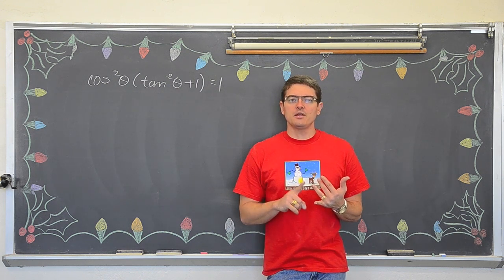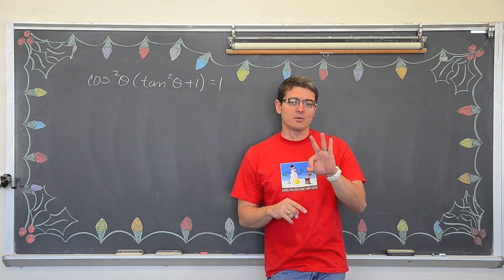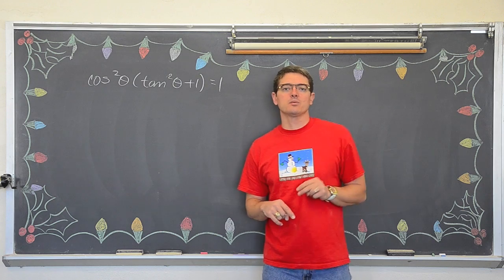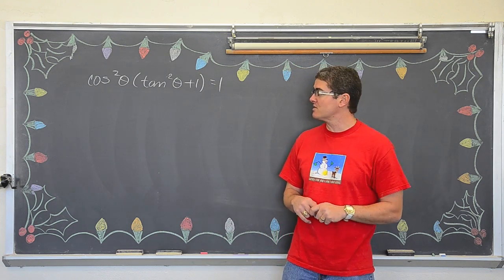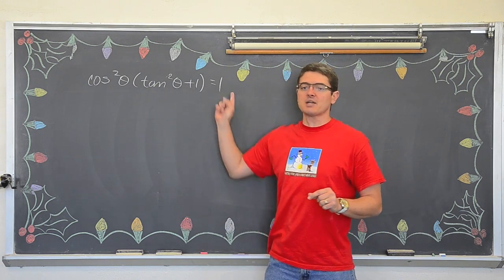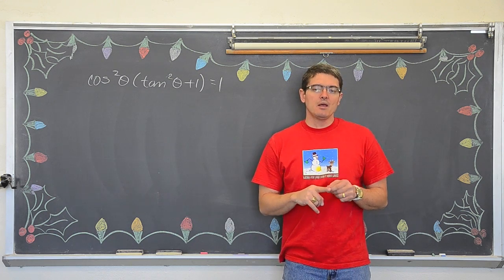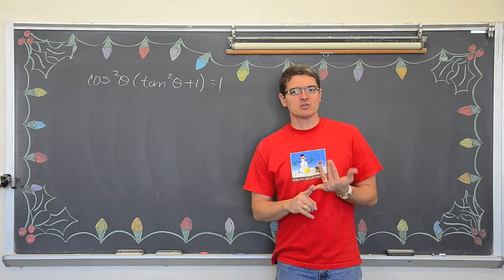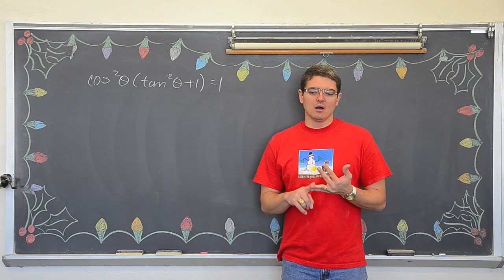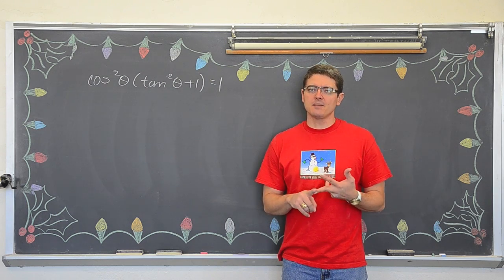The next thing you want to do is you want to look for the three Pythagorean identities. Like any of the big heavy duty identities. Right now we only have three, the three Pythagorean identities. Sine squared plus cosine squared equals one. One plus tangent squared equals secant squared. And one plus cotangent squared equals cosecant squared. And see if any of those big identities help to simplify and make these two sides equal. And then if there is, if none of those identities will help, which they will with this one, then move on.